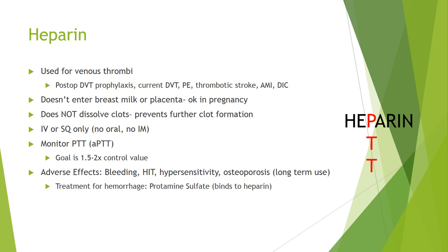One benefit of heparin is that it does not cross into the placenta or breast milk, so it's appropriate to use in pregnancy. One key point: heparin is a powerful drug, but it cannot dissolve existing clots. We give it to a patient with a DVT so that the DVT doesn't get bigger. Heparin can only be given IV or sub-Q — not IM because this could cause hematomas, and not orally because it won't work. We monitor the partial thromboplastin time, or PTT (sometimes called APTT).